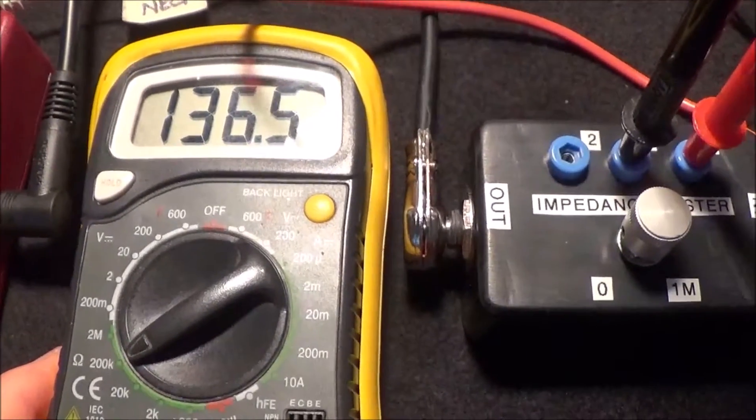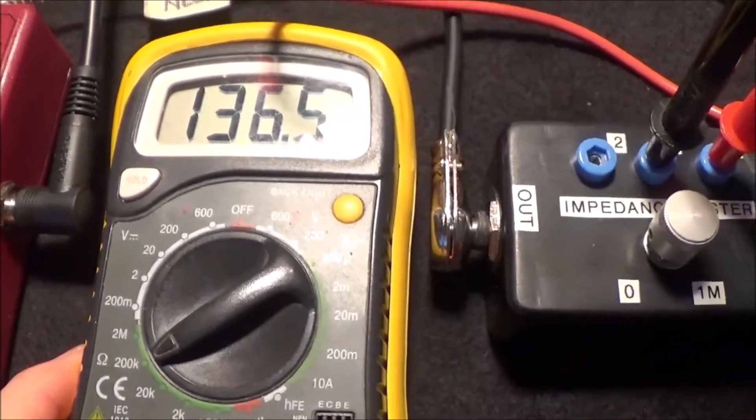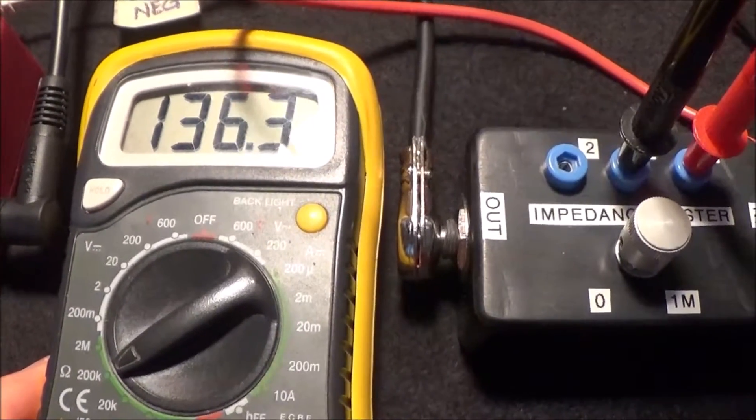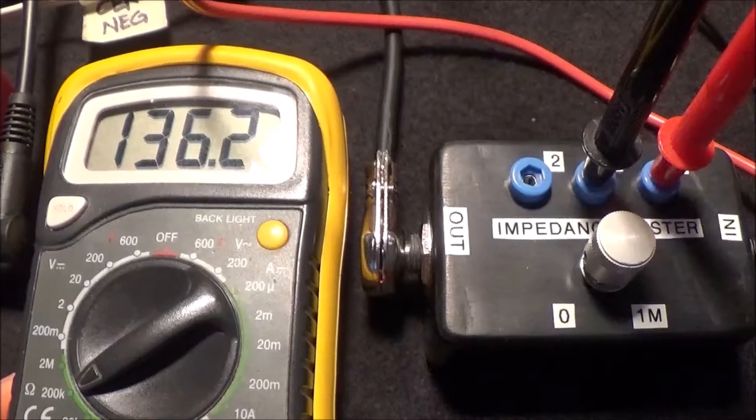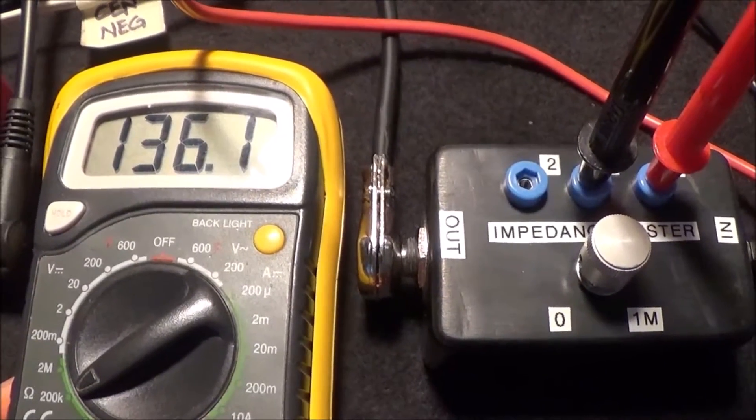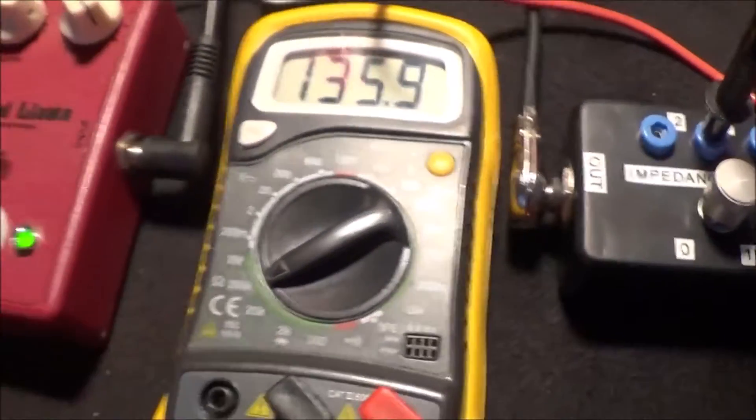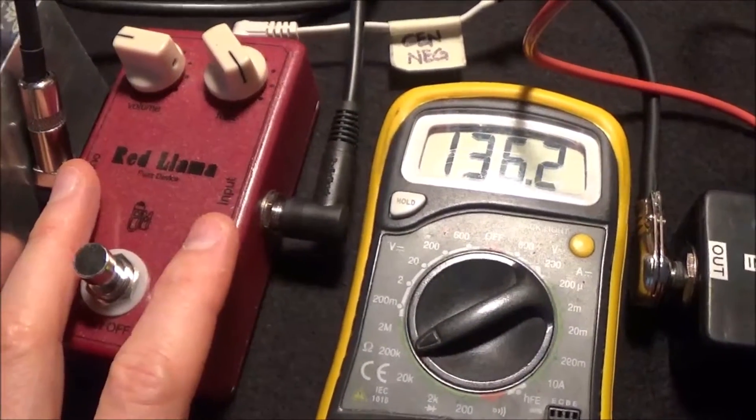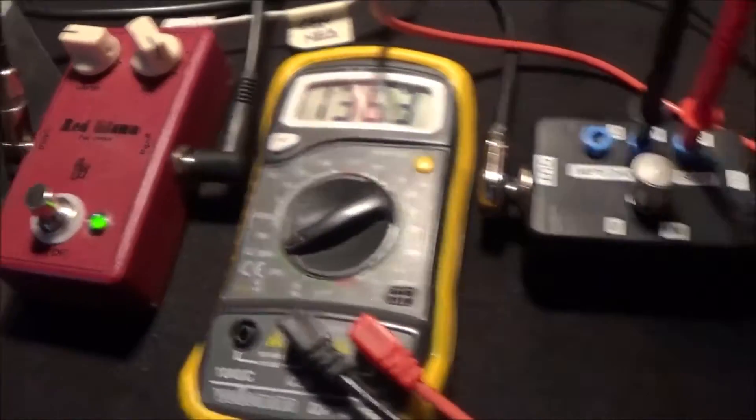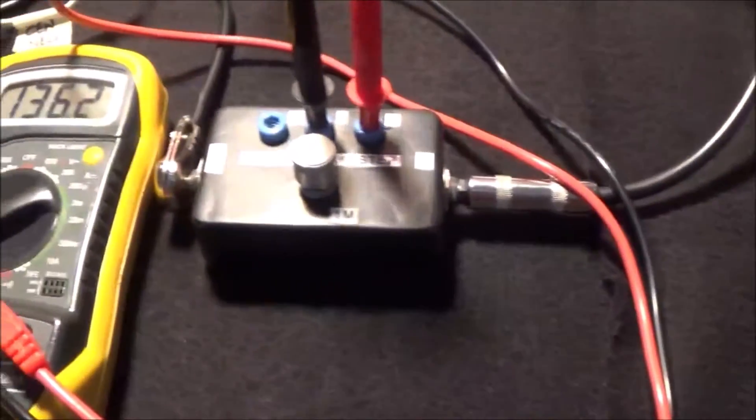As you can see here, this says that the input impedance is approximately 137K. I did this earlier before I started the video and I set it to one volt and measured about 147K. We can say that the input impedance of this pedal is approximately 150K.